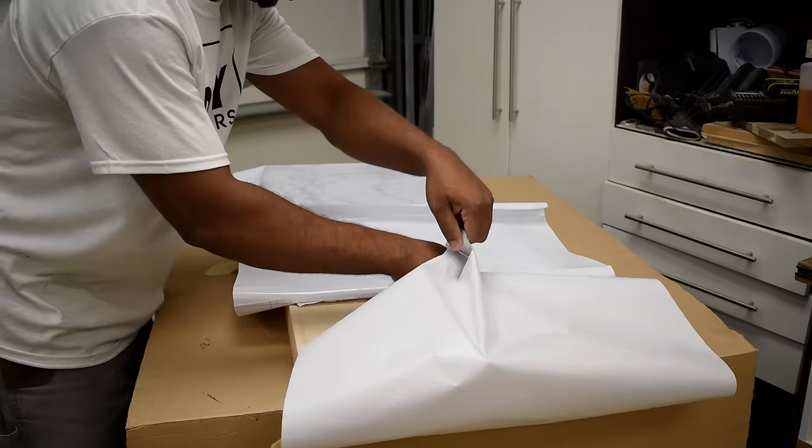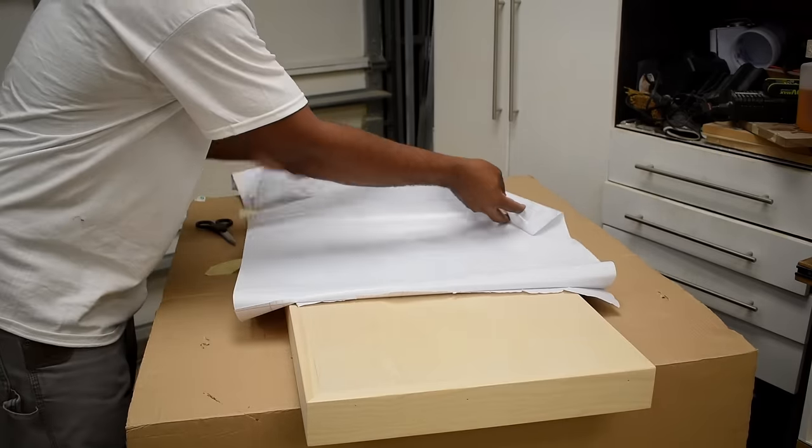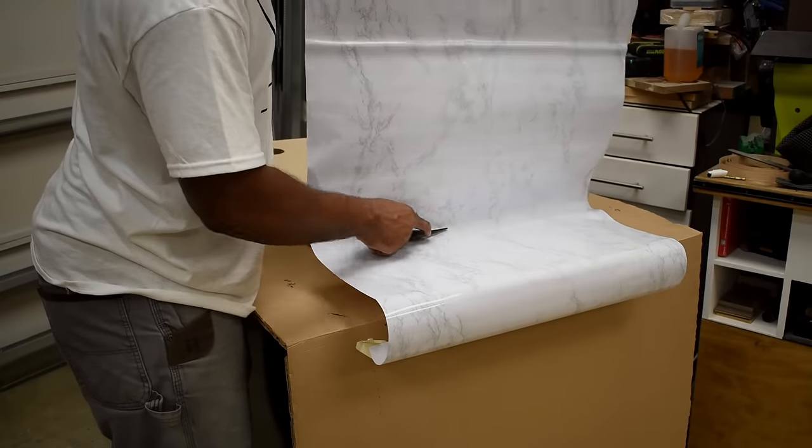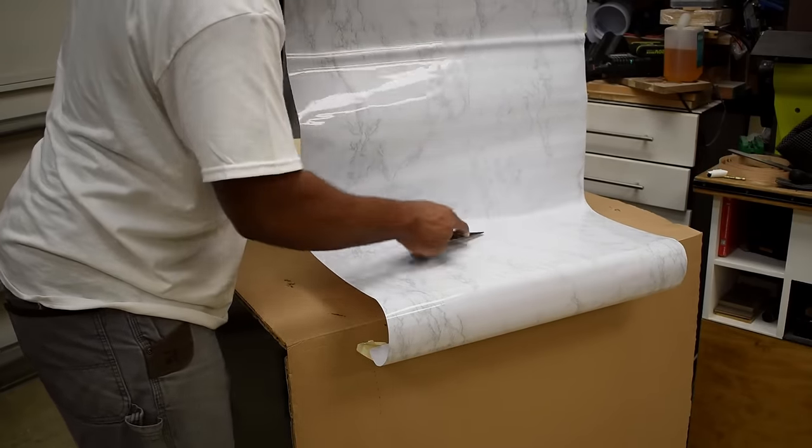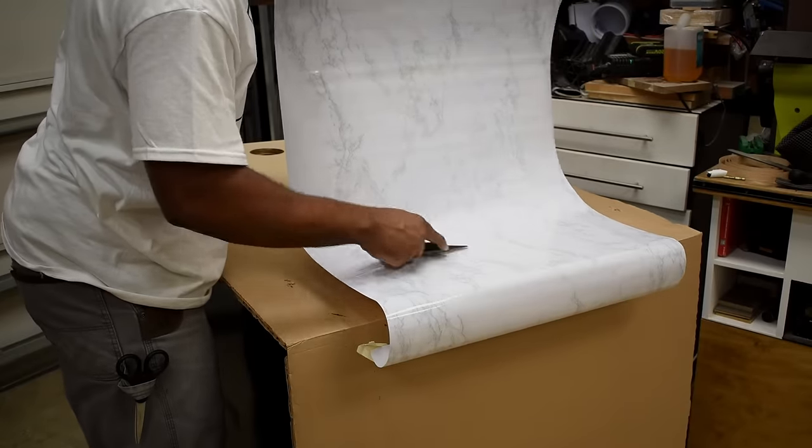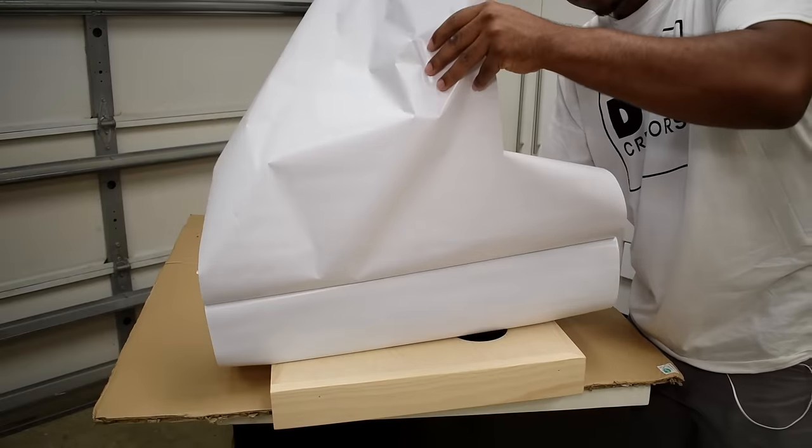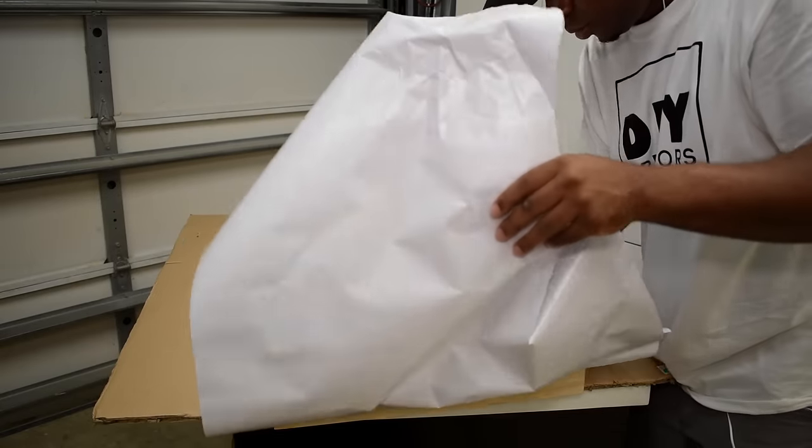Then I peeled off some of the backing. This stuff is quite sticky, so after fighting with it and getting it loose, I was able to start applying it to the surface. The important thing to know is that this doesn't really hide anything, so anything you have in your work surface is actually going to show through the vinyl.